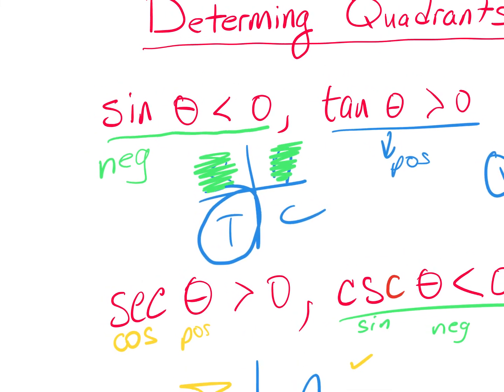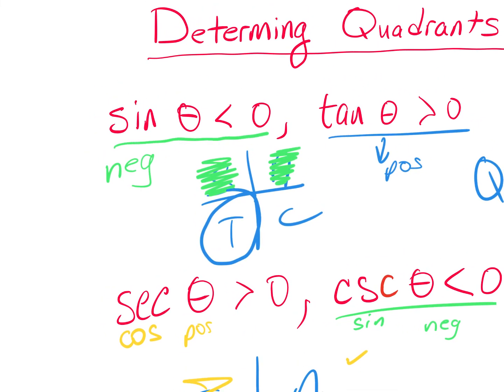To summarize the method: use the first statement to cross off two quadrants. Sine less than zero means it can't be Q1 (all positive) or Q2 (sine positive), leaving Q3 and Q4. Then use the second statement — tangent positive — to determine which of the remaining two quadrants applies. Tangent is positive in Q3, so the angle lies there. Use the first statement to narrow down, then the second to finalize.